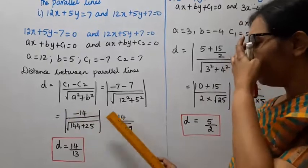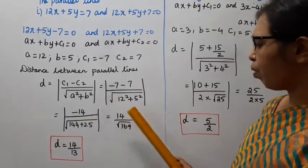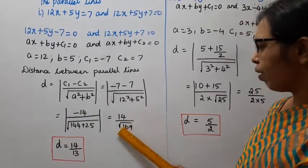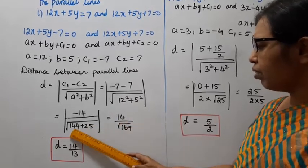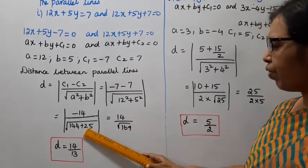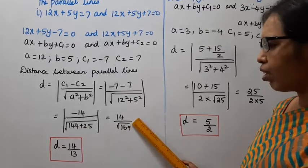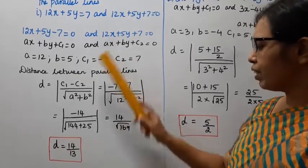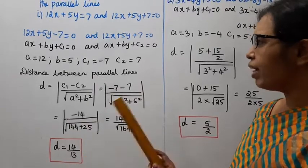That is equal to 14. Mod gives positive value. Distance is positive value. 14 by 144 plus 25, root of 169. Root of 169 is 13. First subdivision answer is 14 by 13.